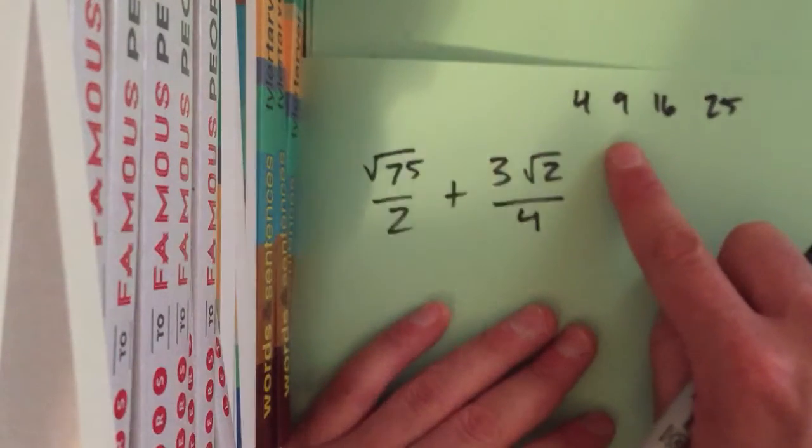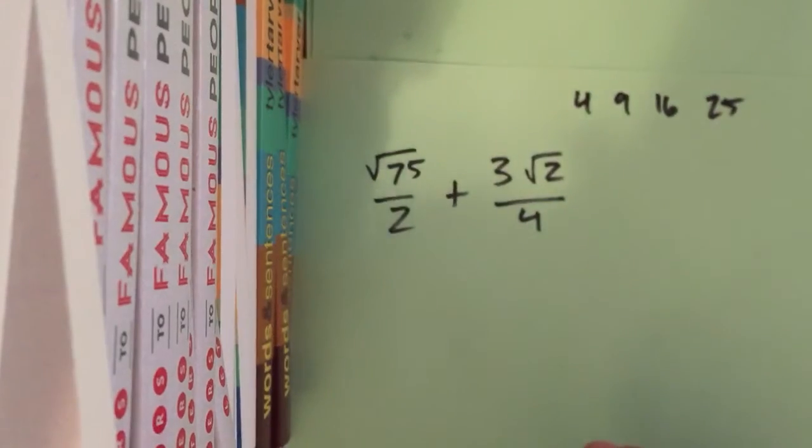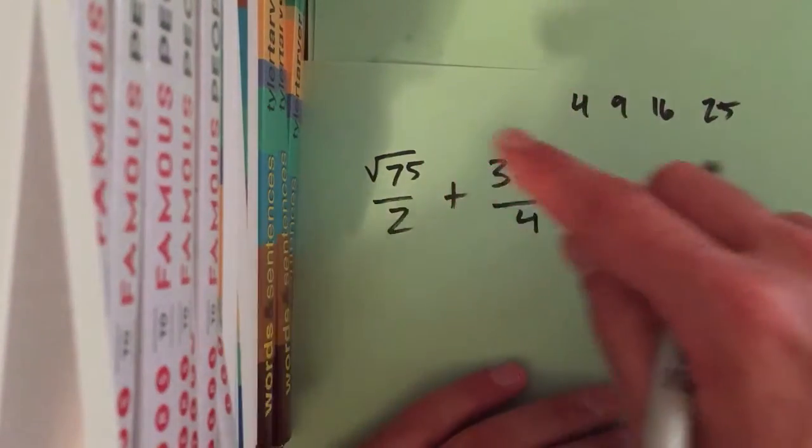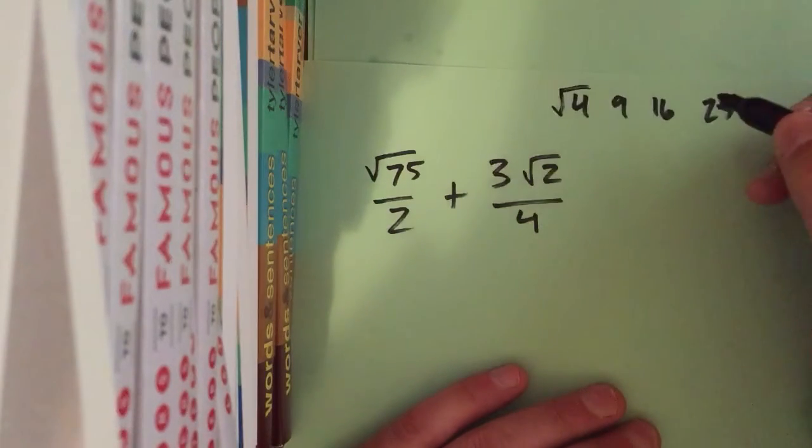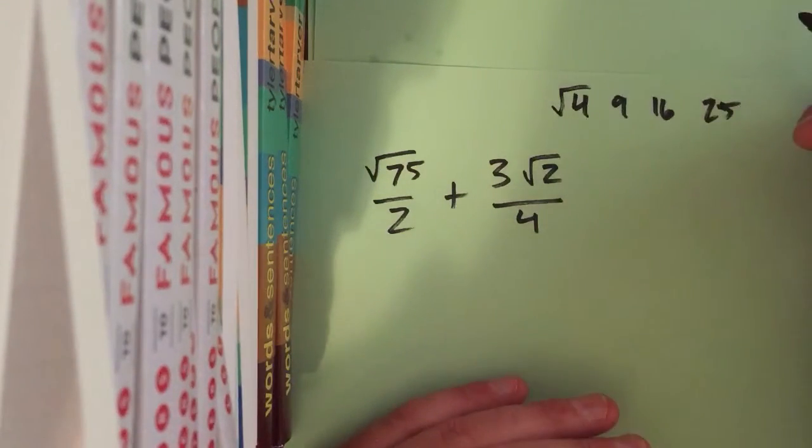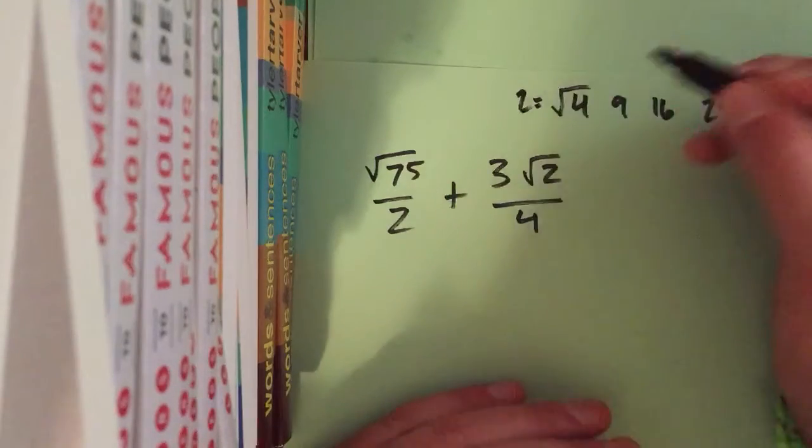All right, here's the reason you're looking for those. You're looking for the multiples of those because if you can break it down to where it's like square root of 4, what does the square root of 4 is? It's 2, because 2 times 2 is 4.